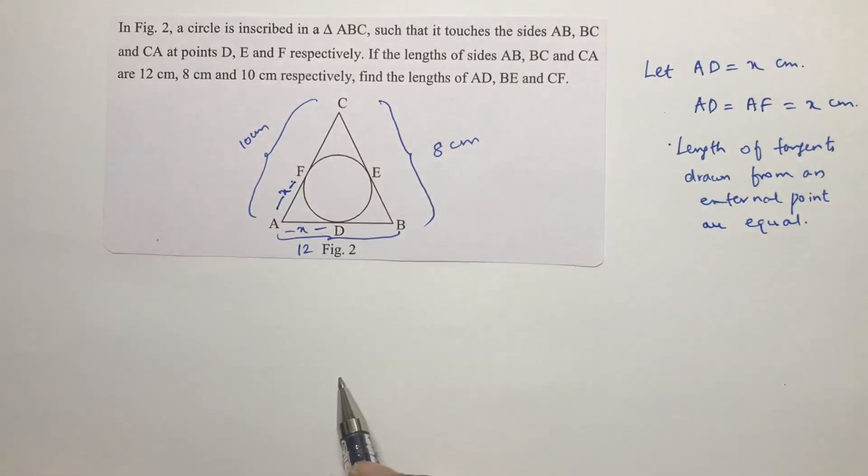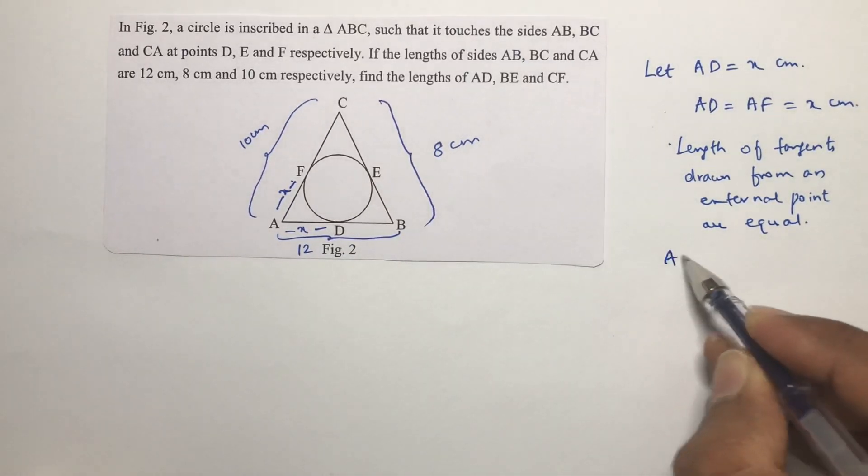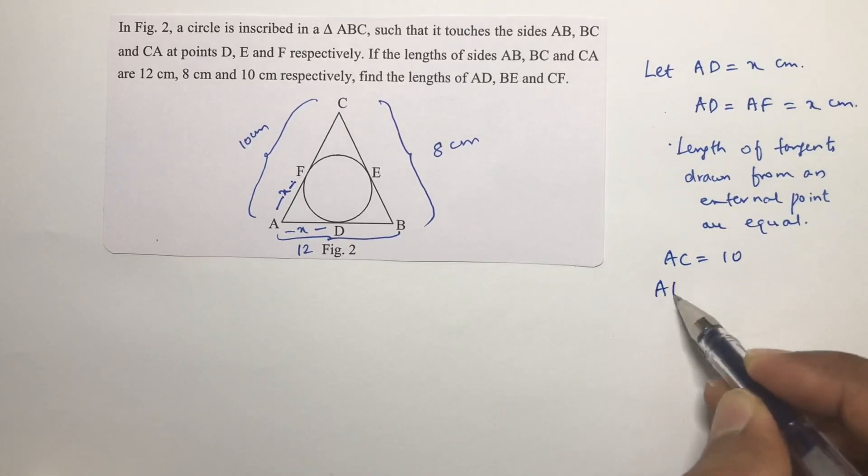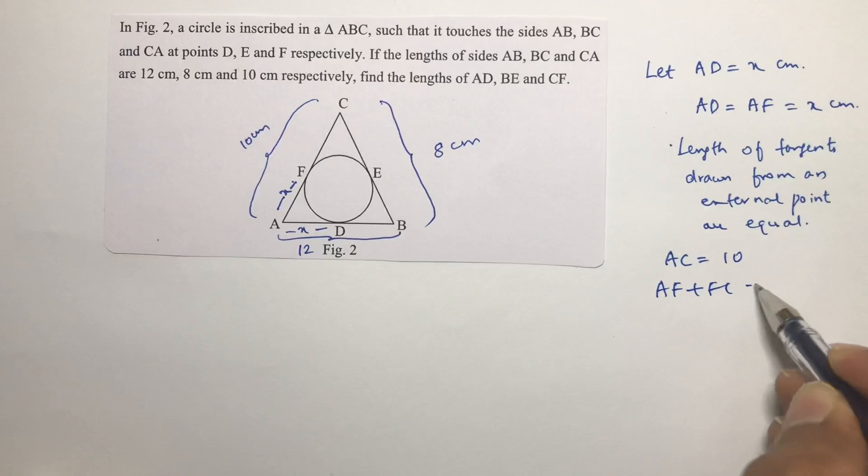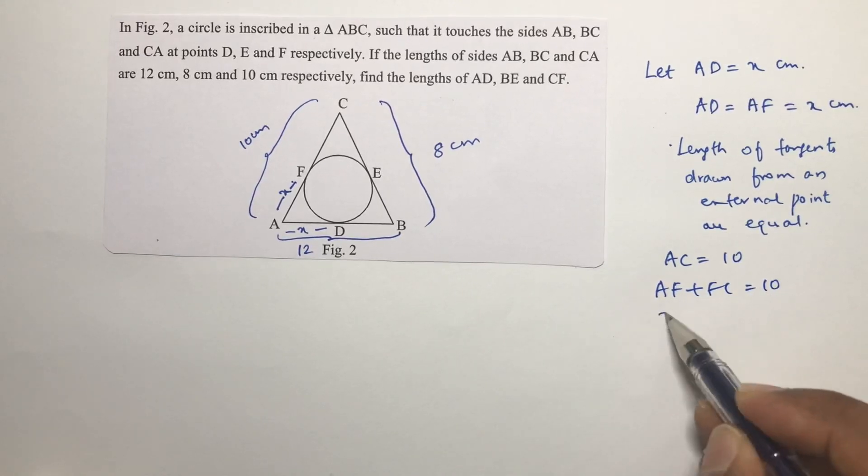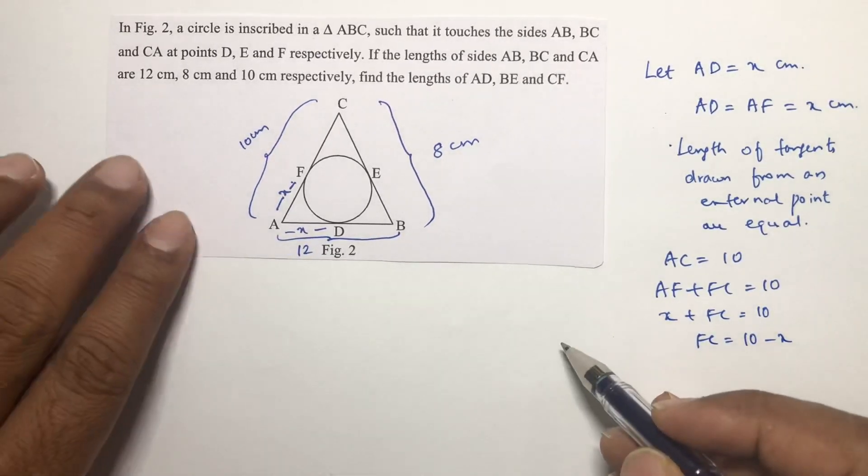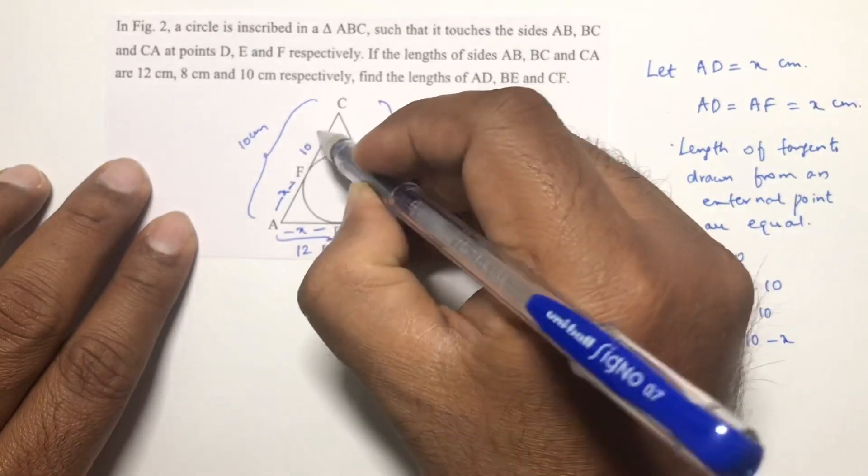Because tangents, length of the tangents drawn from an external point are equal. So this is also x. Now see AC is 10 but AC is AF plus FC. AF is x so FC will be 10 minus x.